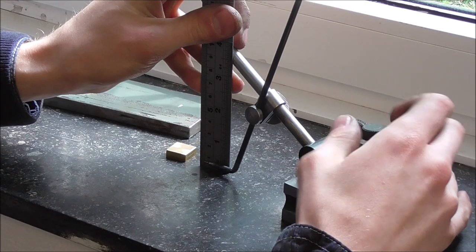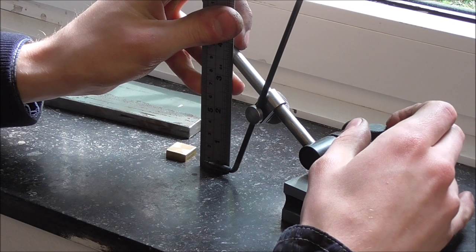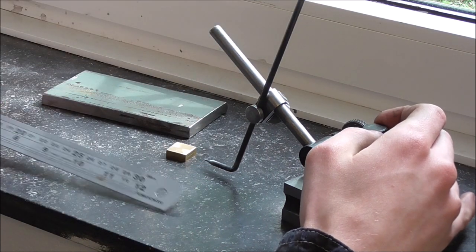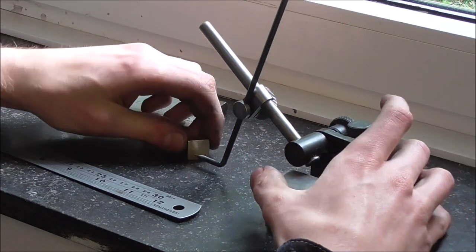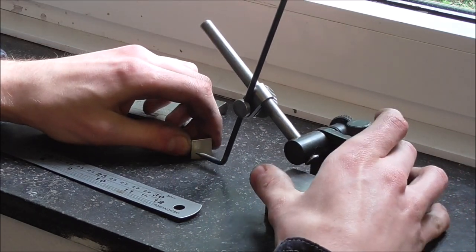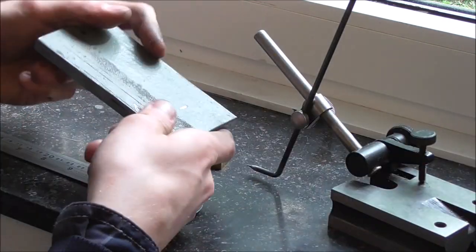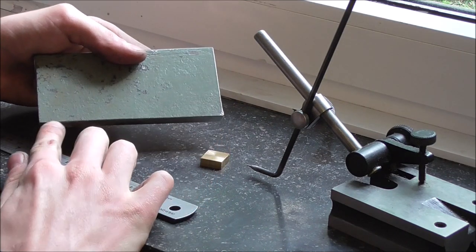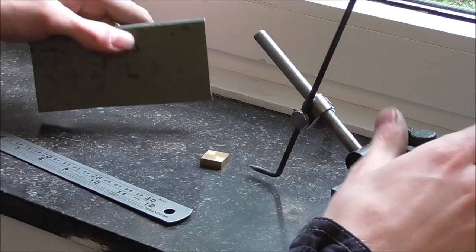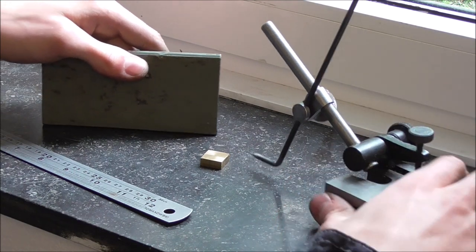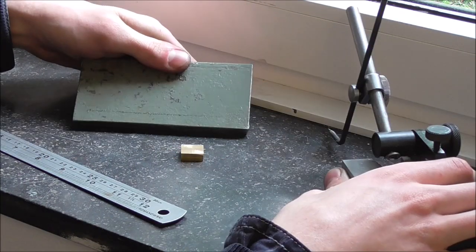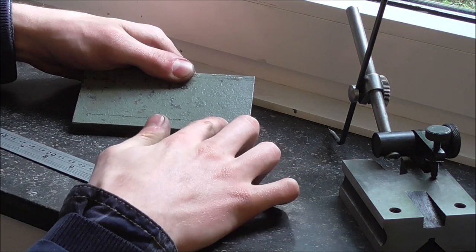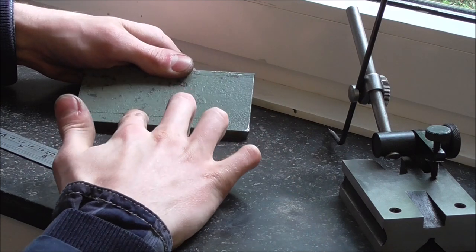You may have noticed I started using a scriber block in order to mark out dimensions on parts. And I have to say these guys really shine when it comes to hole positions. Say for example you have a part like this one here which needs a row of 10 holes drilled all the same distance away from this edge here. Well, set your distance on this block, scribe the line, and every hole I set onto this line is going to be exactly as far away from this edge as the last one.